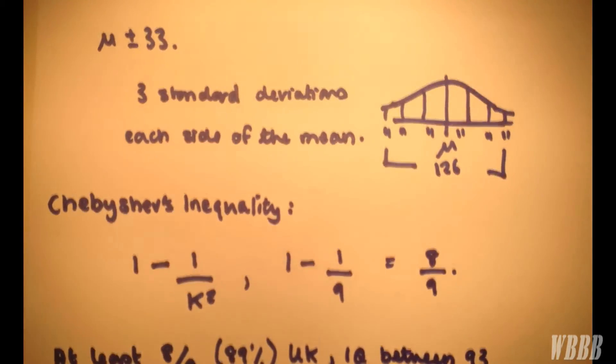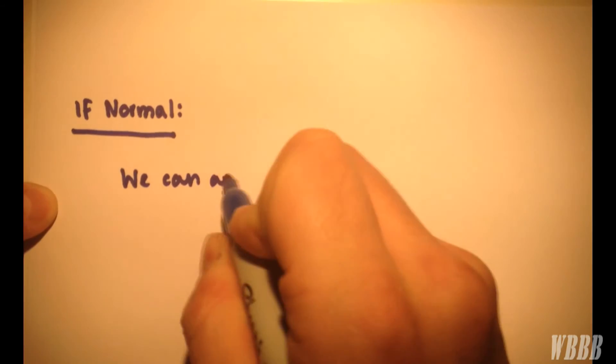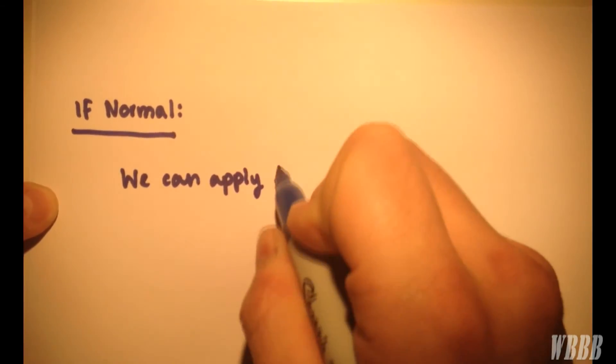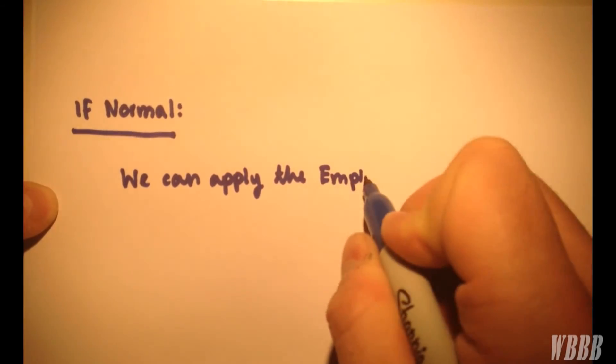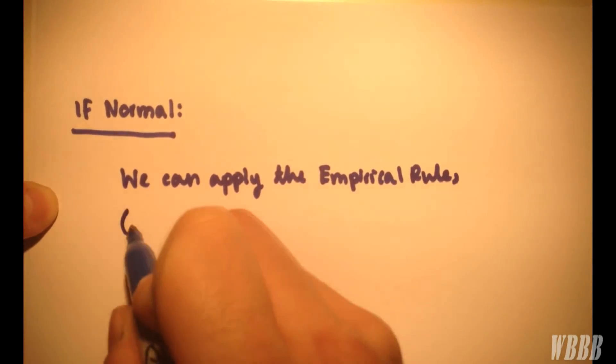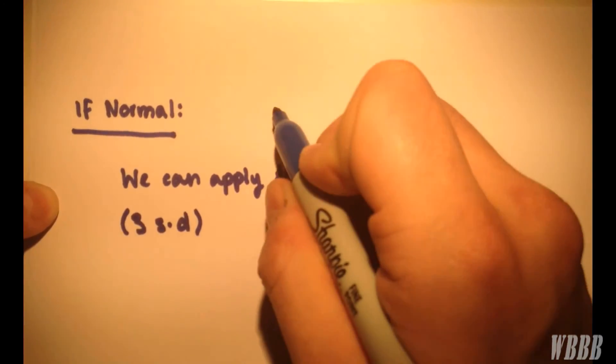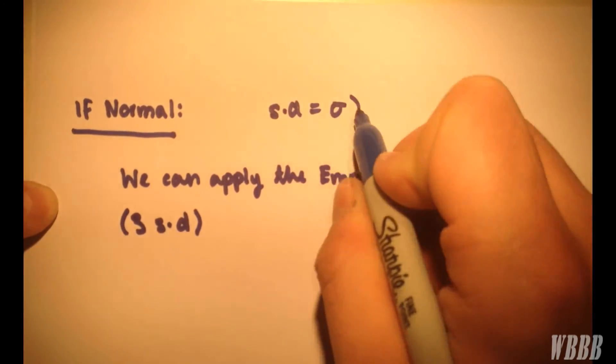So how do we use the empirical rule? So if the distribution is normal, we can apply the empirical rule, because in our question we considered 3 standard deviations, which is why this is known as the 3-sigma rule, because of course standard deviation is represented by sigma.